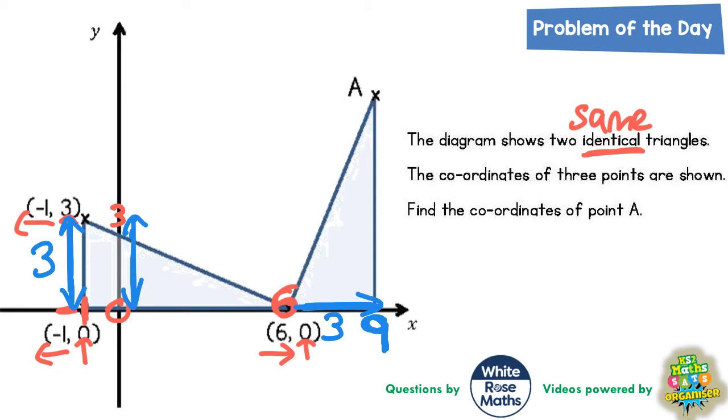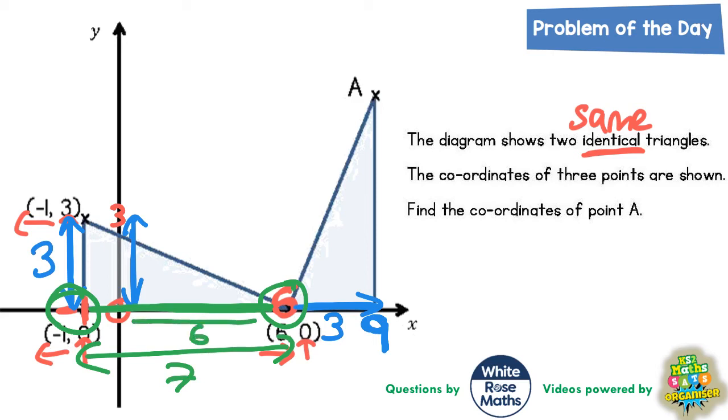Now if we get a different color and look at the longer side of the triangle, that is going from this minus 1 up to 6. Well the gap from minus 1 to 6 is basically 7 because from 0 to 6 is 6 and from 0 to minus 1 is 1, and 1 plus the 6 gives us the 7. So if this long side is worth 7, then the vertical side on the other triangle must also be worth 7 and we must be going 7 up. And seeing as the bottom of the triangle is level with 0, if we go 7 up, that point A must be 7 up.